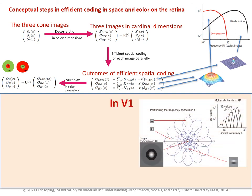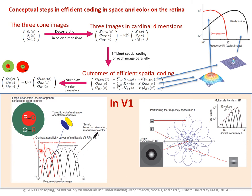In V1, we do it analogously. Essentially, just replace the retinal spatial coding by V1's spatial coding, which is now multiscale and orientation-tuned in many cases. The whole frequency range is divided into separate bands under the same contrast sensitivity curve, and the contrast sensitivity curve for the chromatic channels also has multiband, multiscale coding. Now we can focus on one band at a time.